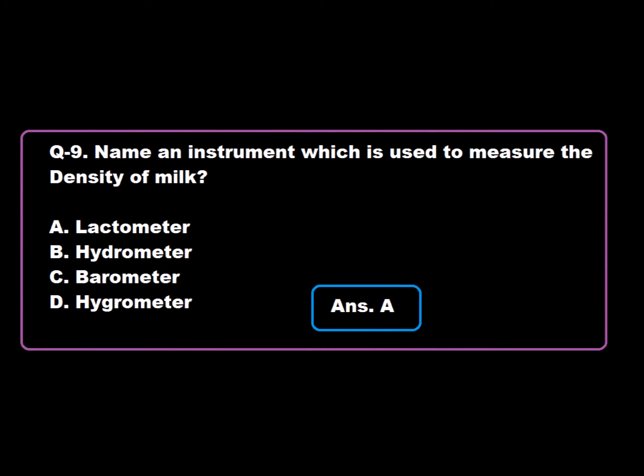Question 9: Name an instrument which is used to measure the density of milk — Option A: Lactometer, Option B: Hydrometer, Option C: Barometer, Option D: Hygrometer. Option A is correct. Lactometer is an instrument which is used to measure the density of milk. Hence, Option A is correct.